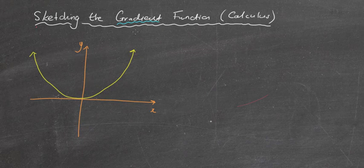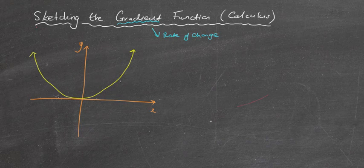Let's talk about the gradient function for a moment. What is a gradient? From the last lesson we looked at the gradient, which is the rate of change. Particularly for a parabola or a curve, we know that the rate of change differs at each point, and that's why finding the gradient at a particular point becomes difficult — because the gradient at that point changes the whole way through.